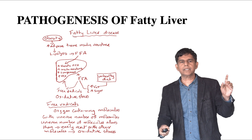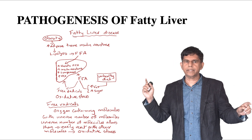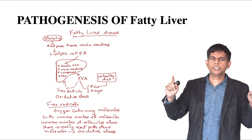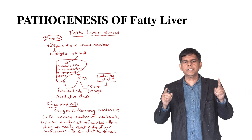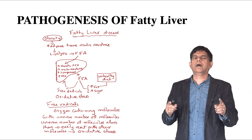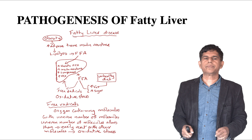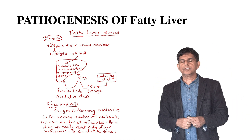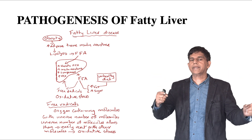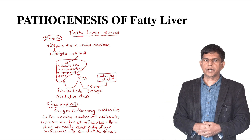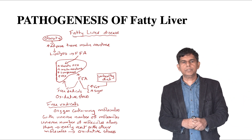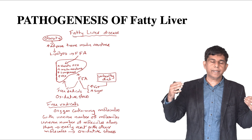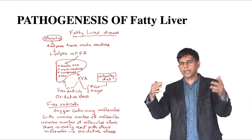What happens in fatty liver disease? The main thing is obesity and an unhealthy diet. Obesity causes adipose tissue insulin resistance, which leads to increased free fatty acids that can damage the liver. There is also free radical formation and oxidative stress — free radicals are oxygen molecules that contain an uneven number of electrons, so they combine with other compounds very easily and cause damage.